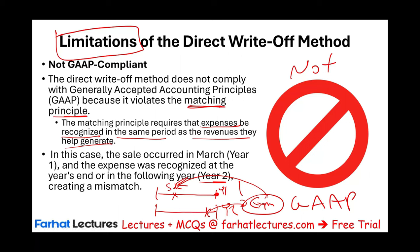The allowance method is the GAAP-compliant method and is what we will learn about next. So we have the direct write-off method, which is not GAAP, and the allowance method, which is GAAP.